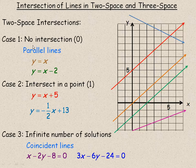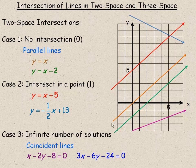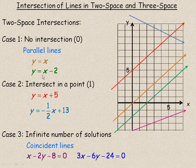Case 1 talks about when there's no intersection points, and that's when you have parallel lines in two-dimensional space. For example, y equals x, this is the line y equals x right here, and y equals x minus 2. If you remember y equals mx plus b, they have the same slope. The slope is 1 for both of those, so they would be parallel lines.